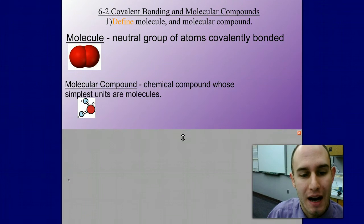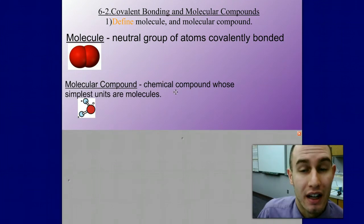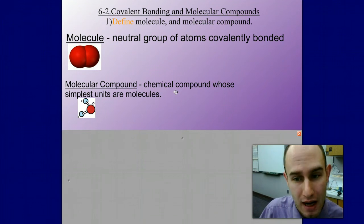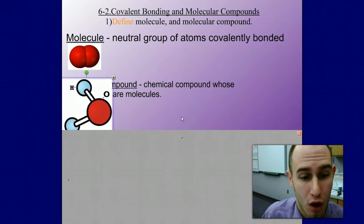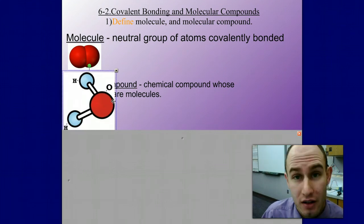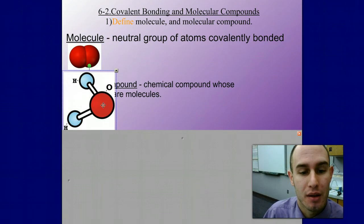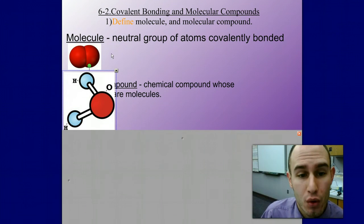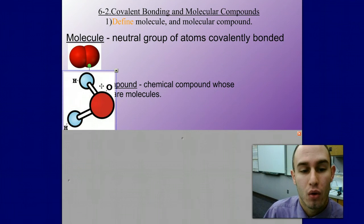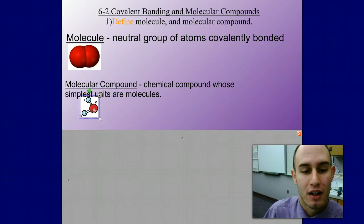A molecular compound is basically a compound whose simplest units are molecules. For example, we have H2O. Everybody knows H2O as water and it is a compound because we are combining two different atoms. A molecule could be like O2, with two atoms of oxygen. Two different atoms and a total of three atoms bonded together makes it a molecular compound.